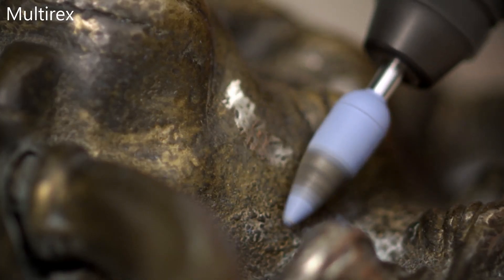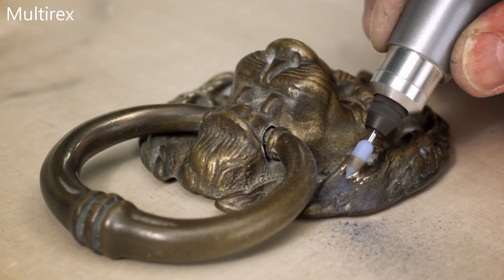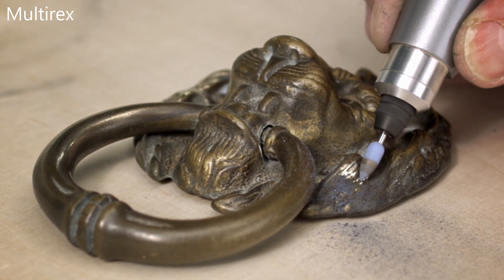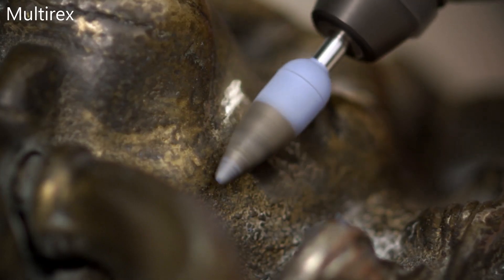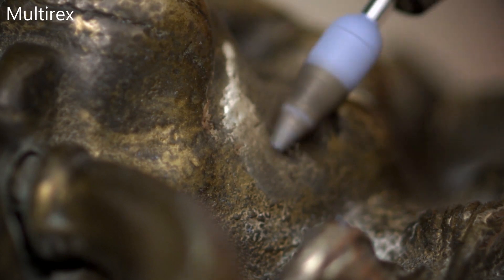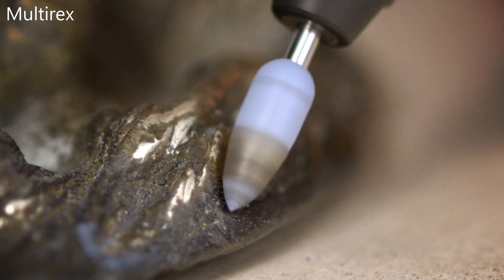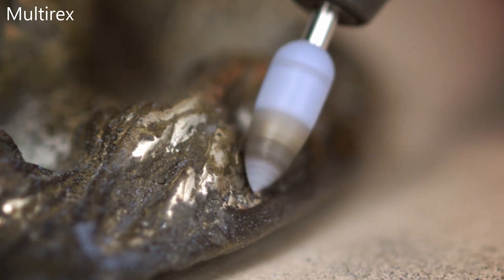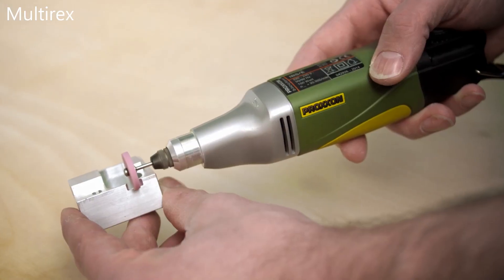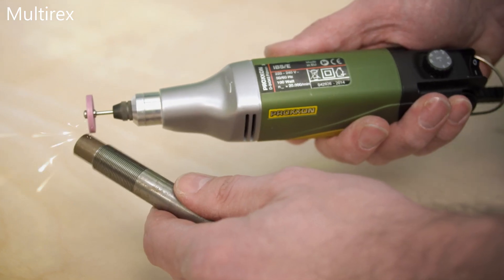Thanks to its specific motor characteristics, the DC special motor generates very high torque even in the low speed range, which is necessary for example in polishing work. The extremely quiet operation lets you work for longer periods without unpleasant vibrations.